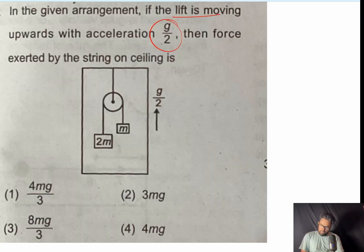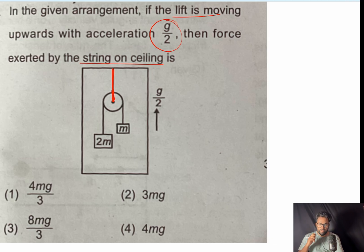The question states that in the given arrangement, the lift is moving upward with acceleration g/2. We need to find the force exerted by the string on the ceiling. Let's solve this problem with respect to the frame of reference of the elevator.